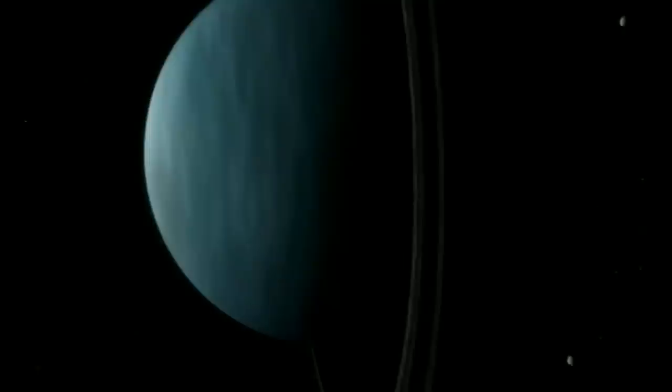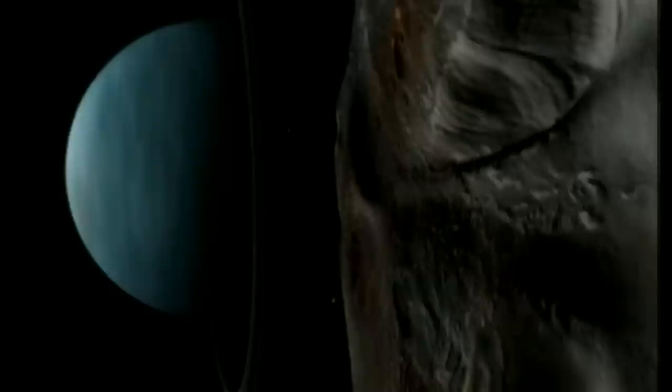Septième planète à partir du Soleil, Uranus gravite dans les zones crépusculaires du système solaire avec un axe de rotation étrangement incliné. Uranus est une géante gazeuse avec des anneaux et des satellites. Celui-ci, Miranda, c'est le diamant brut du système solaire, un bloc de roche glacée couvert de falaises plus hautes que l'Everest.